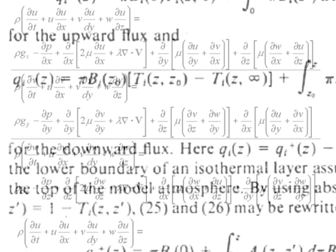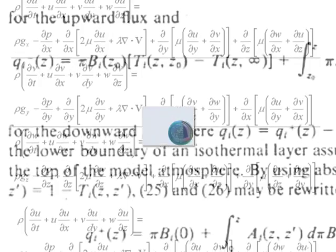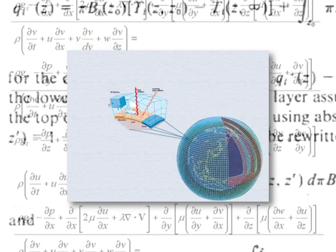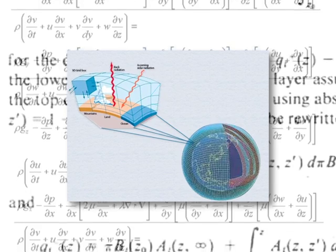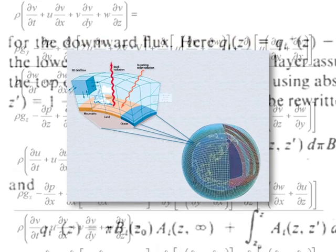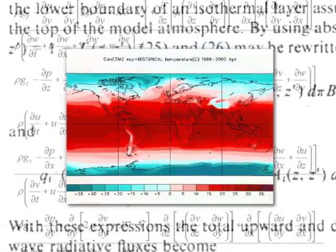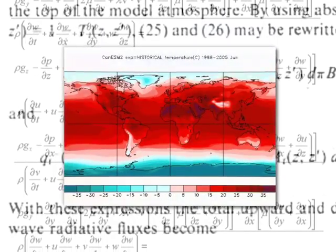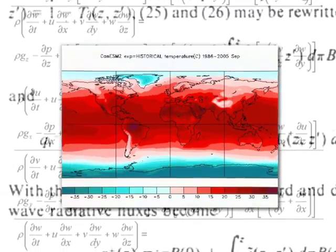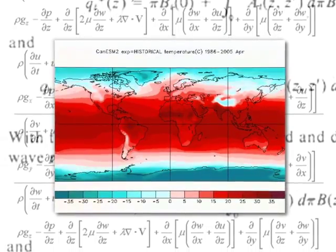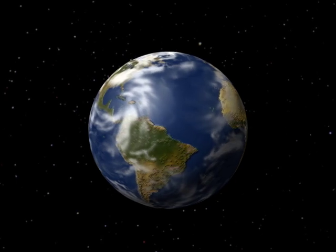We have seen that climate models are a reliable means to assist scientists in understanding the causes of past climate change and to project future climate change. Hopefully, you now have a better sense of what these complex models can do, and the important role they play in understanding our past and future climate on Earth.